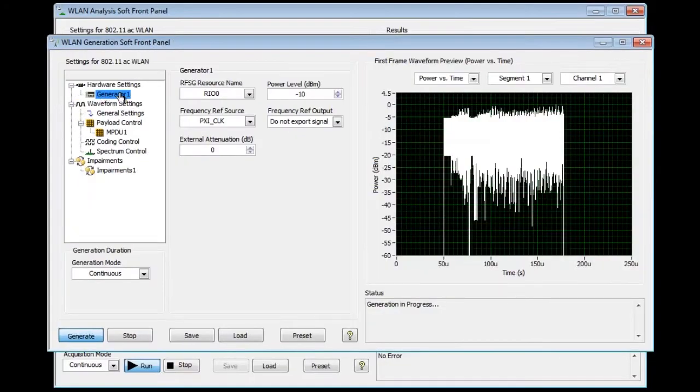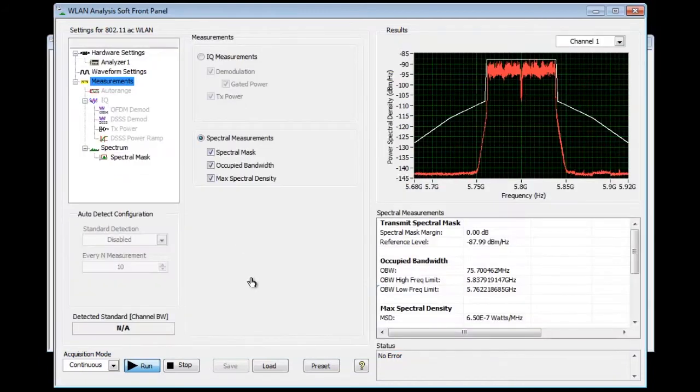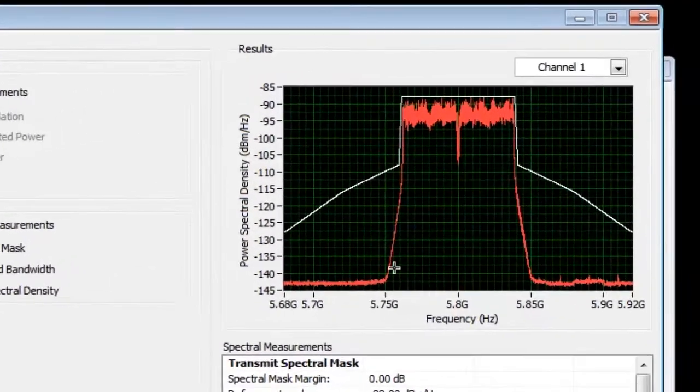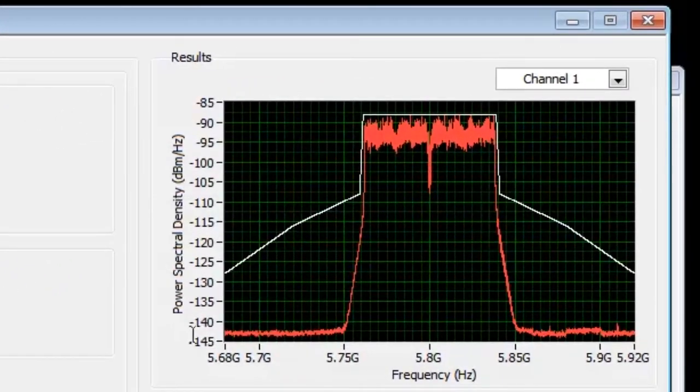Here I have the NI WLAN Generation Soft Front Panel generating that waveform, and here's the NI WLAN Analysis Soft Front Panel acquiring the waveform. Here we can see the spectral mask showing 80 MHz bandwidth.